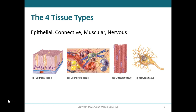Muscle tissue contracts to move the body or move something within the body, generate force, and cause heat to be generated — think about what happens when you get cold and your muscles shiver. The fourth classification is nervous tissue, which initiates and transmits action potentials, commonly called nerve impulses, that help coordinate movements of the human body.